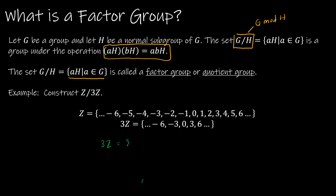3Z contains ..., -6, -3, 0, 3, 6, ... and so on in each direction. On Z, that accounts for all the multiples of 3. But we want to partition the entire set Z.